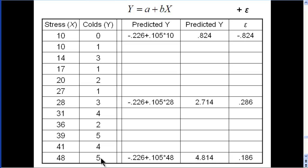And then the same person for 5. With an X value of 48, with their stress levels, we predict, based on the regression equation, that they would have 4.814 colds.